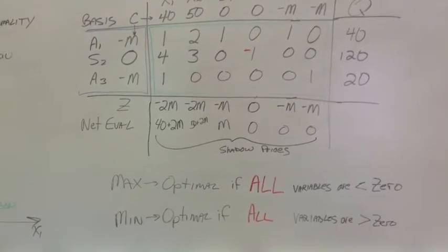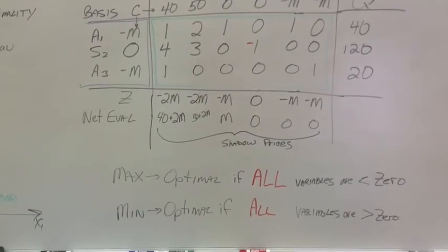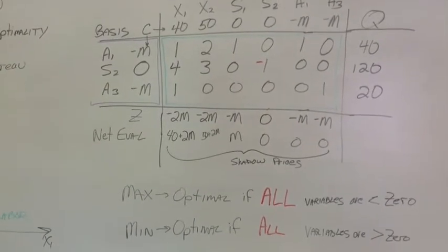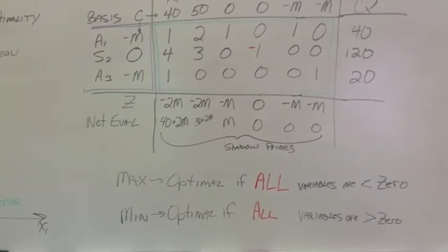Remember, the M stands for a very large number. Think of it as million. So for example, for the x1 variable, that's a positive 2 million and 40, so that's way positive there.